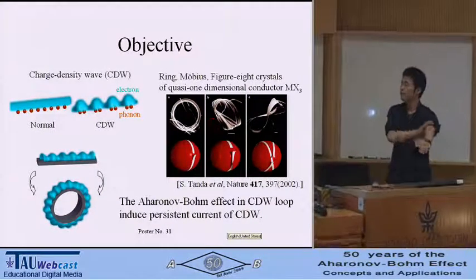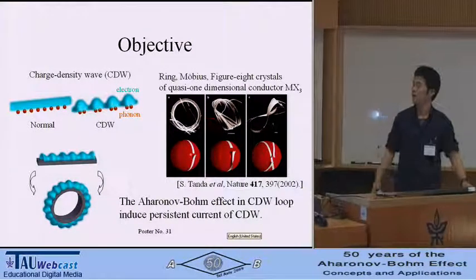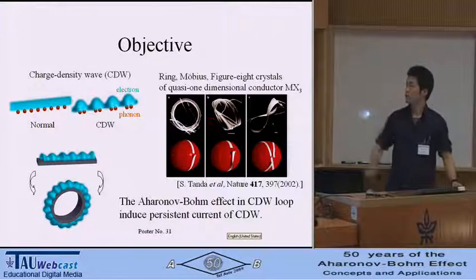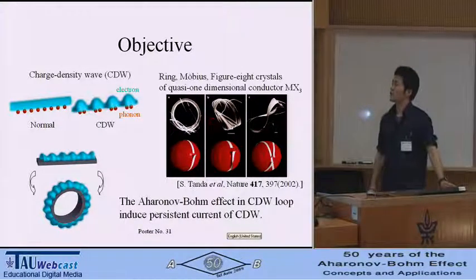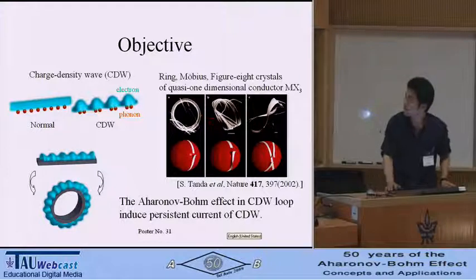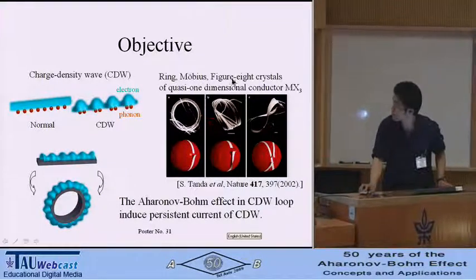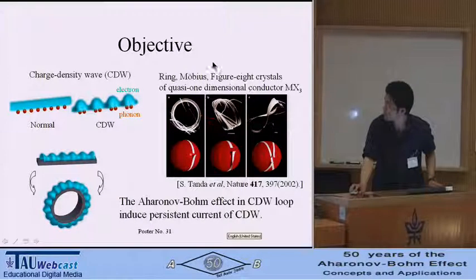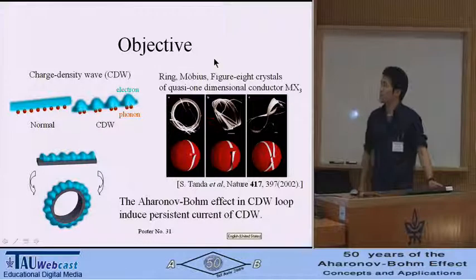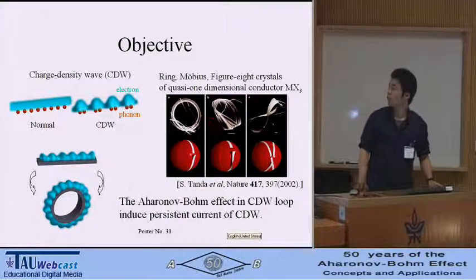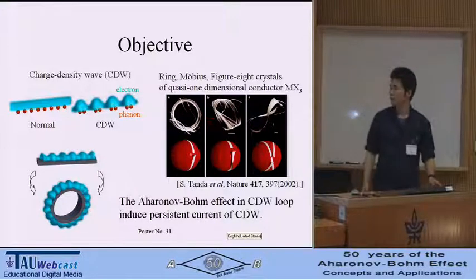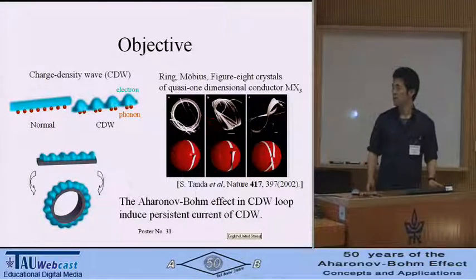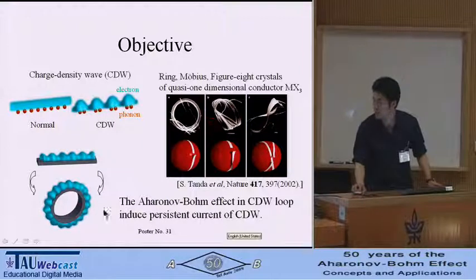A phase transition to charge density waves can occur in low-dimensional conductors. Recently, topological crystals such as ring, Möbius, and figure-of-eight crystals were discovered in quasi-one-dimensional conductors. These crystals have a series of loops, meaning a seamless and circular series of chains.